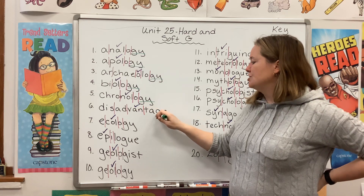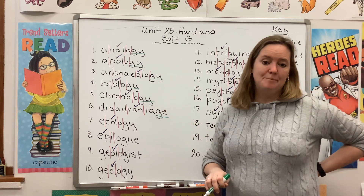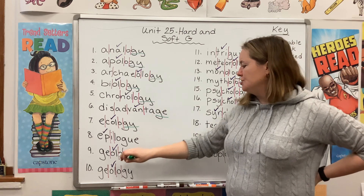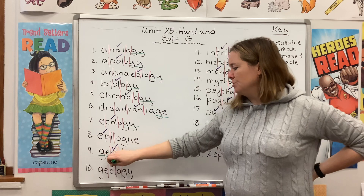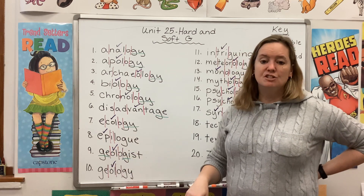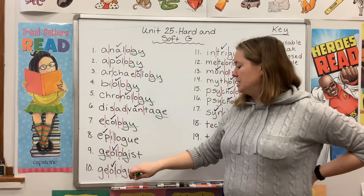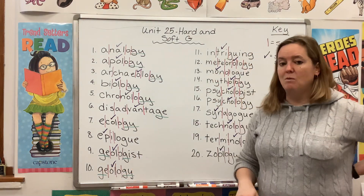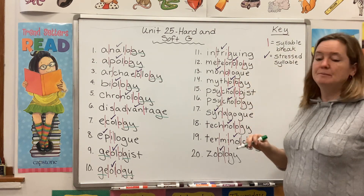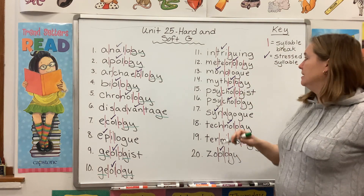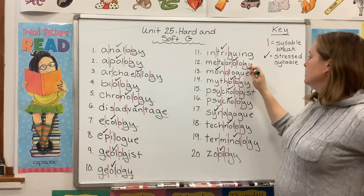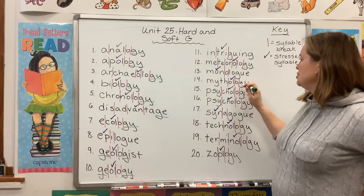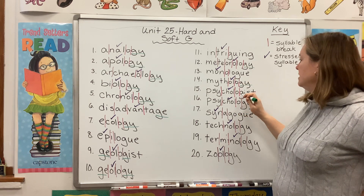Disadvantage, G-E. Ecology, G-Y. Geologist, we have two — G-E and G-I. Geology, we also have two — G-E and G-Y. Intriguing, no soft G's there. Meteorology, G-Y. Nothing in monologue. Mythology, G-Y.